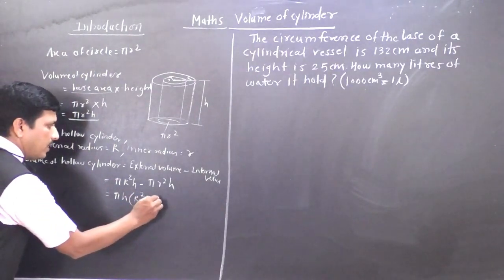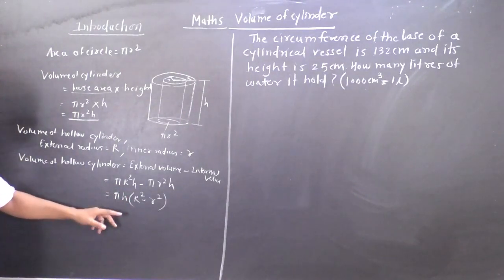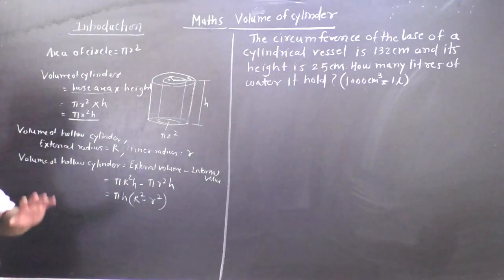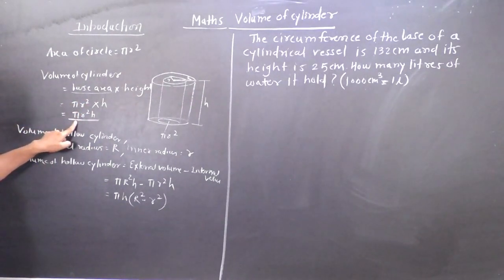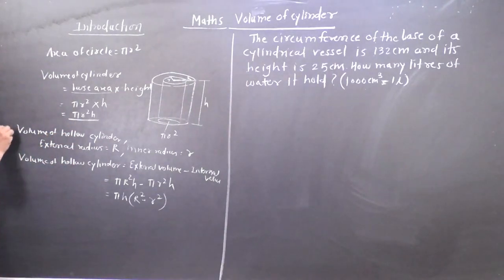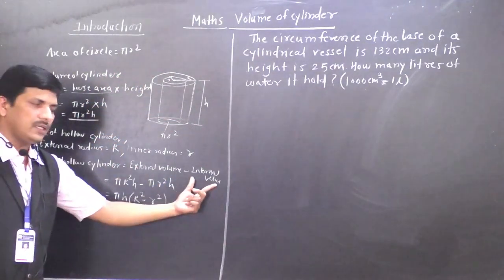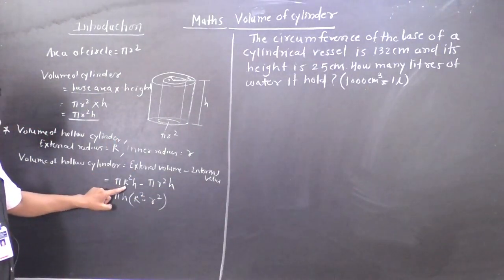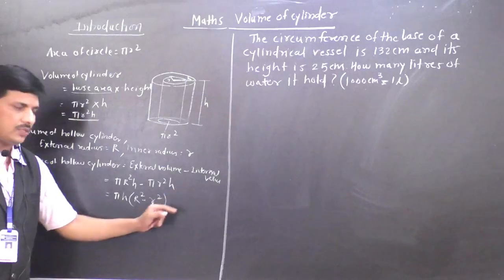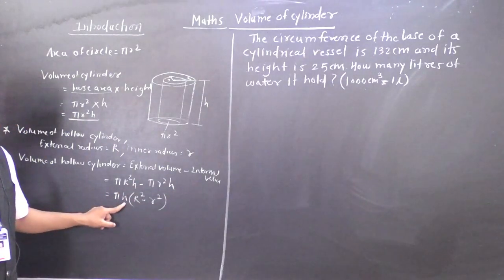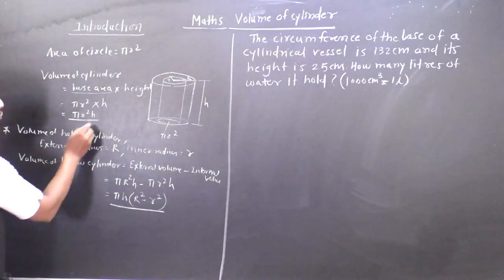So from πR²h minus πr²h, we can take π and h as common, so what remains in the bracket is R² minus r². So the volume of hollow cylinder is π × h × (R² − r²). So these two formulas we are going to use: for a right circular cylinder it is πr²h, and for a hollow cylinder it is πh(R² − r²).